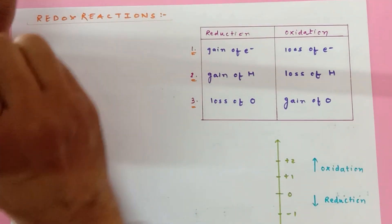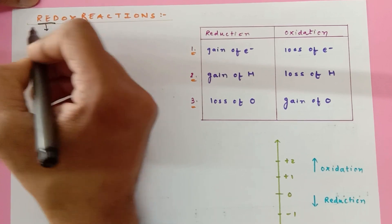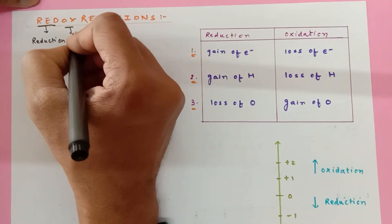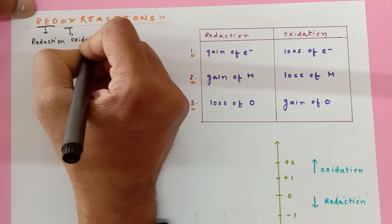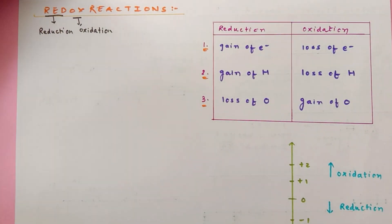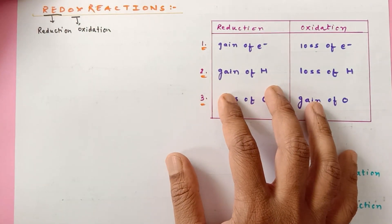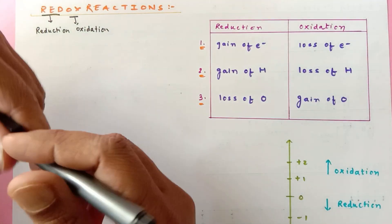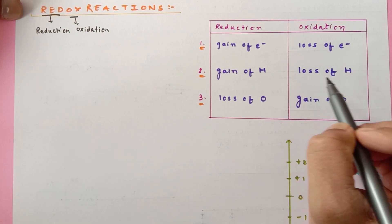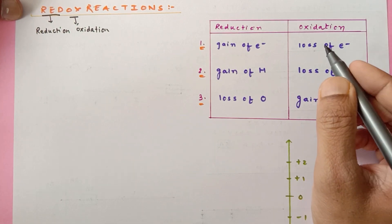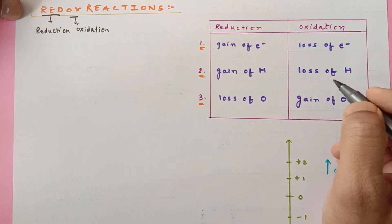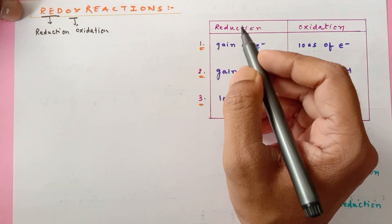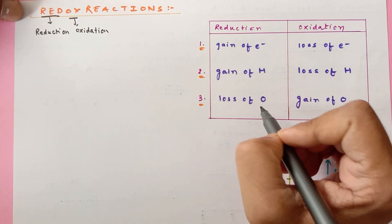Redox basically means: 'red' means reduction and 'ox' means oxidation. In redox reactions you have to understand two things — what is reduction and what is oxidation. In oxidation there are three terms: either there can be loss of electrons, or loss of hydrogen, or gain of oxygen. If any one of these three criteria is satisfied, then that particular substance or compound undergoes oxidation. In reduction it is just the opposite: gain of electrons, gain of hydrogen, loss of oxygen.